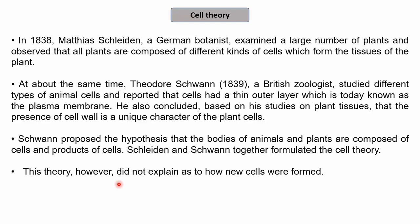With time, a theory called the cell theory came into existence. In 1838, Matthias Schleiden, a German botanist, examined a large number of plants and observed that plants are composed of different kinds of cells which form tissues — a group of cells. In 1839, zoologist Theodor Schwann studied different animal cells and reported that these cells had a thin outer layer, which we now know as the plasma membrane or cell membrane.